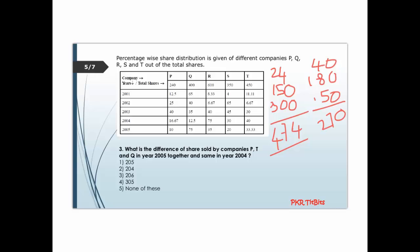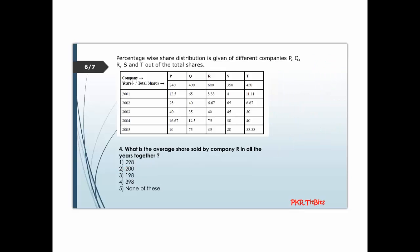Finding the difference gives us 474 minus 270 equals 204. There is only one matching option, so the answer is option 2. Moving to the next question: what is the average share sold by company R across all the years?